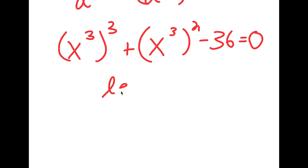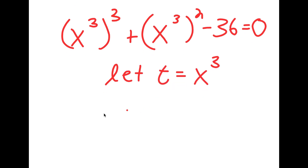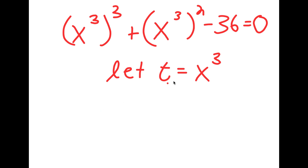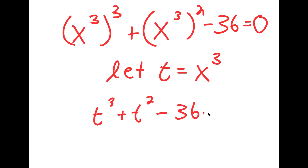Now I'm going to let the variable t equal to x to the power of 3. So if I substitute in t for x to the power of 3, I get t to the power of 3 plus t squared minus 36 is equal to 0.